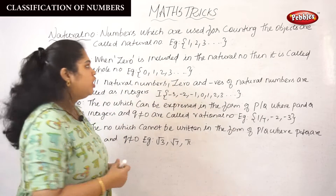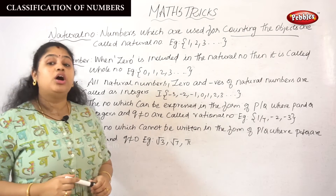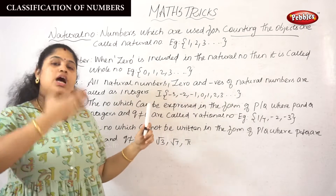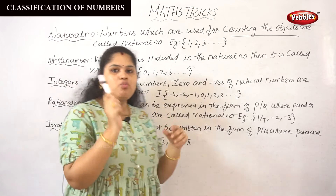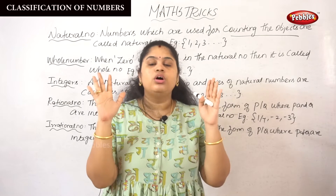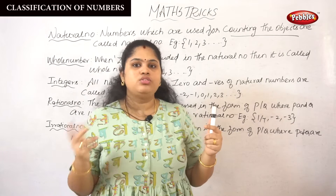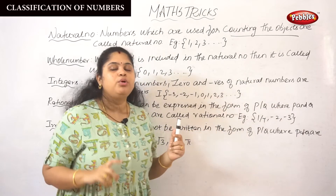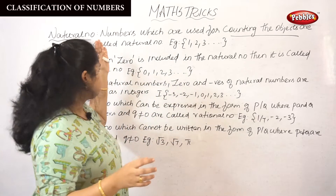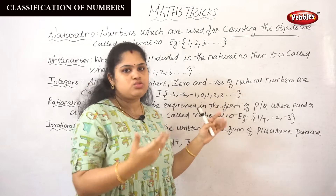Please note: numbers which are used for counting the object are called natural numbers, starting from 1, 2, 3. For example, I have 1 marker, I have 1 desktop, I have 2 eyes, I have 2 hands. We cannot use 0 to count objects, so natural numbers always start from 1, 2, 3 and so on.